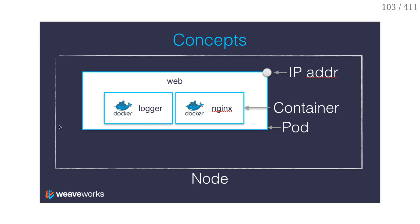They run together on a single machine. For instance, here is a pod that has NGINX, a web server, and a logger — whatever logger could be. NGINX and logger need to run together in that case. So when the scheduler is going to decide where NGINX goes, it decides at the same time where logger goes. They always will go together.